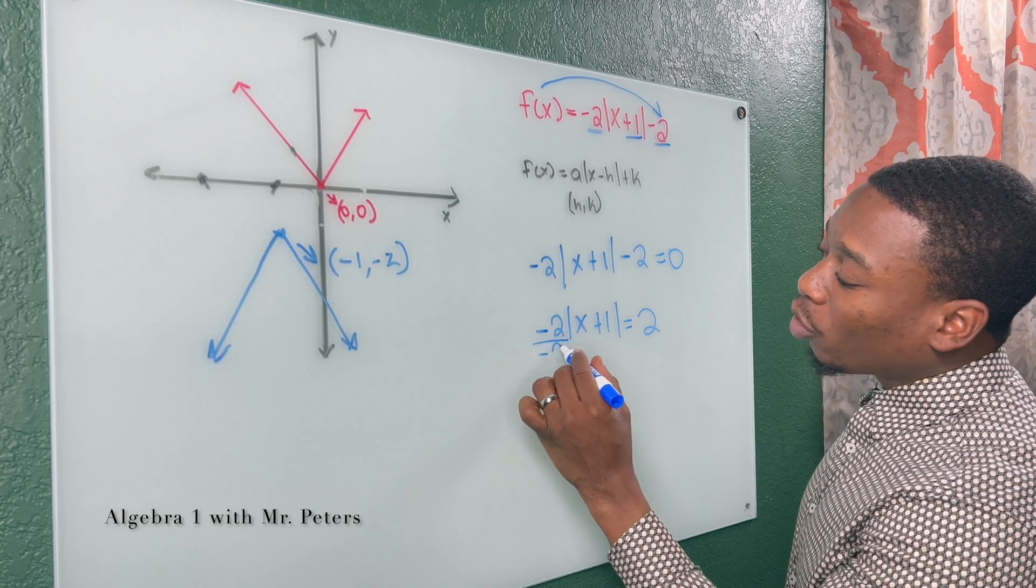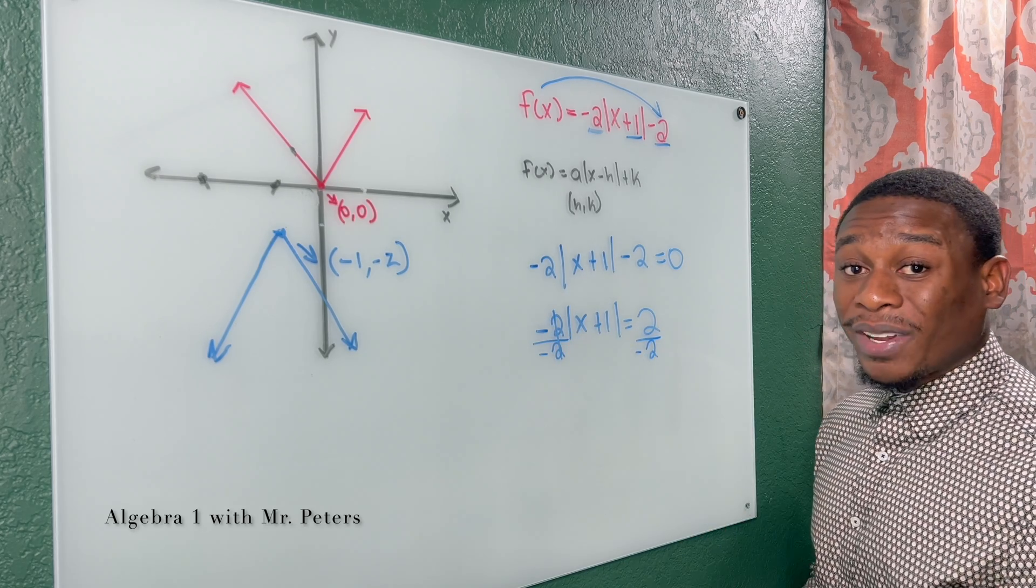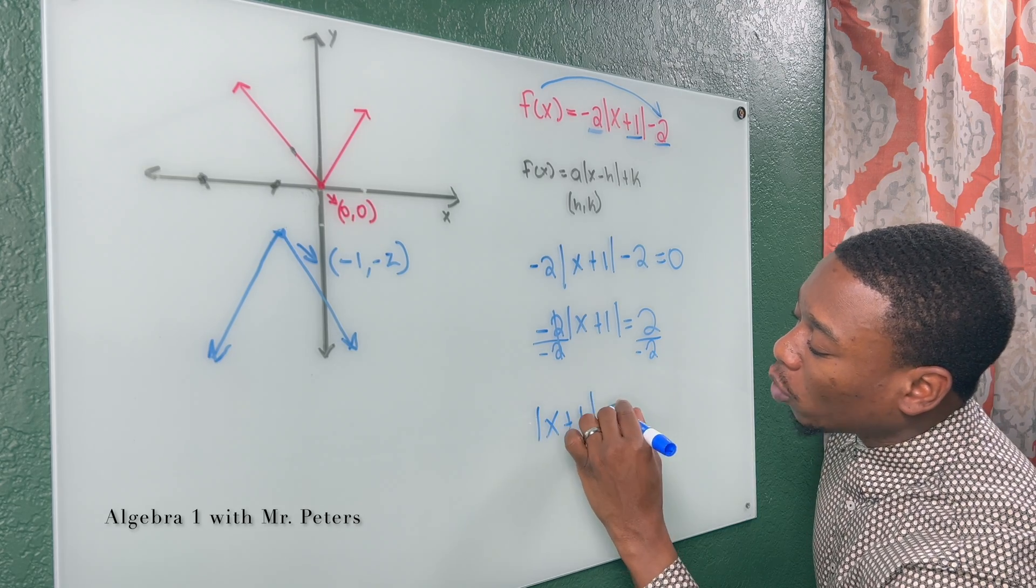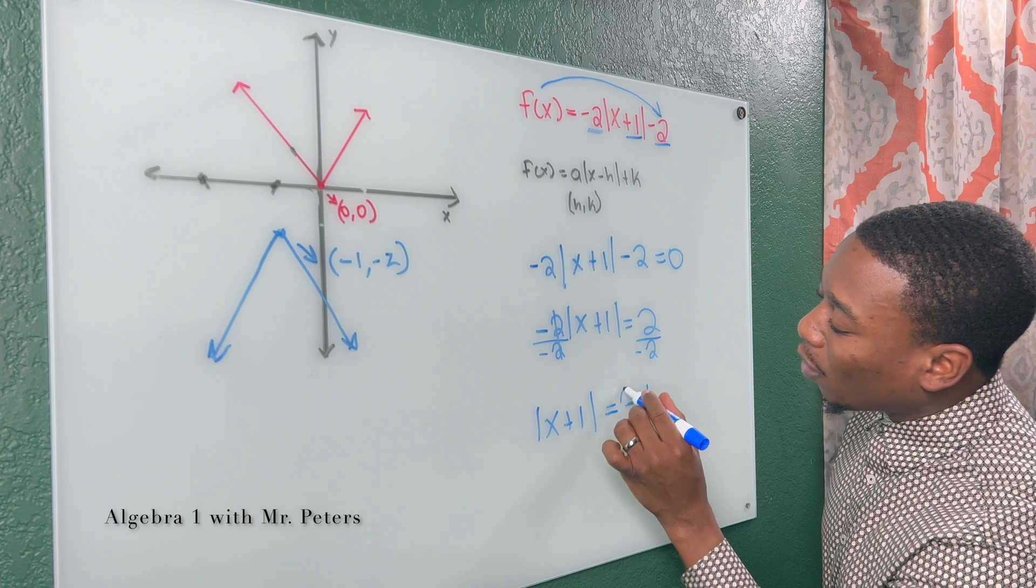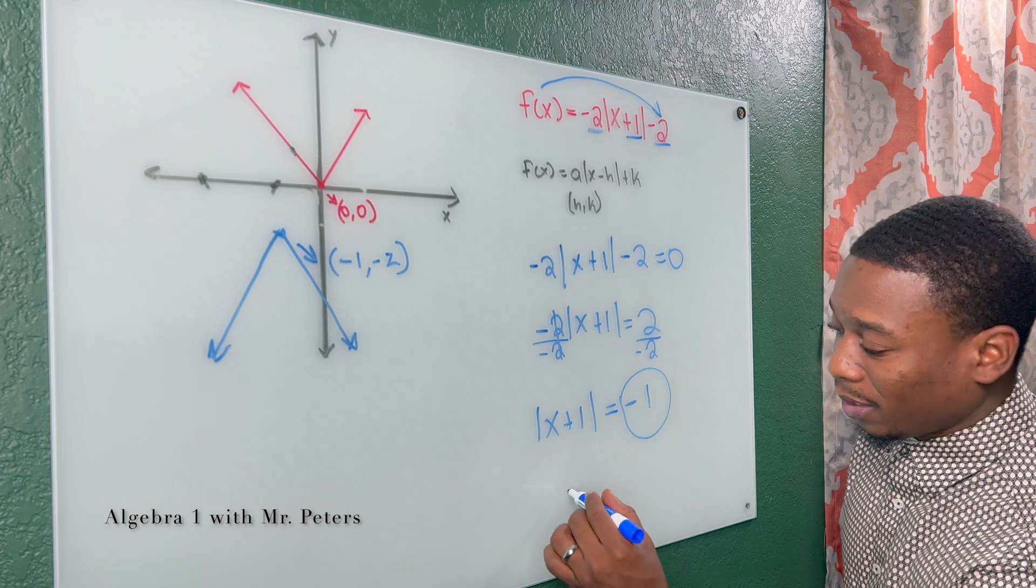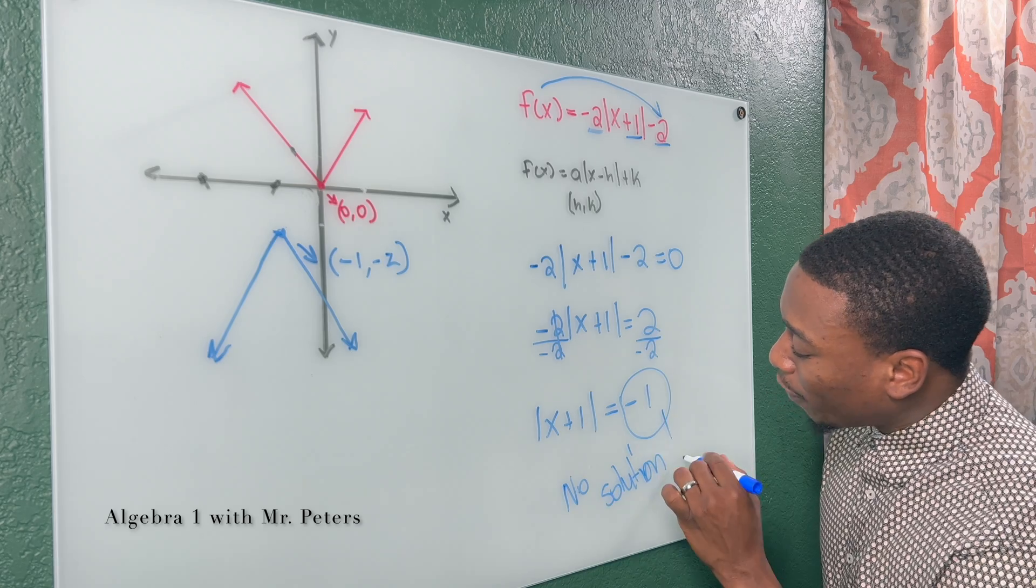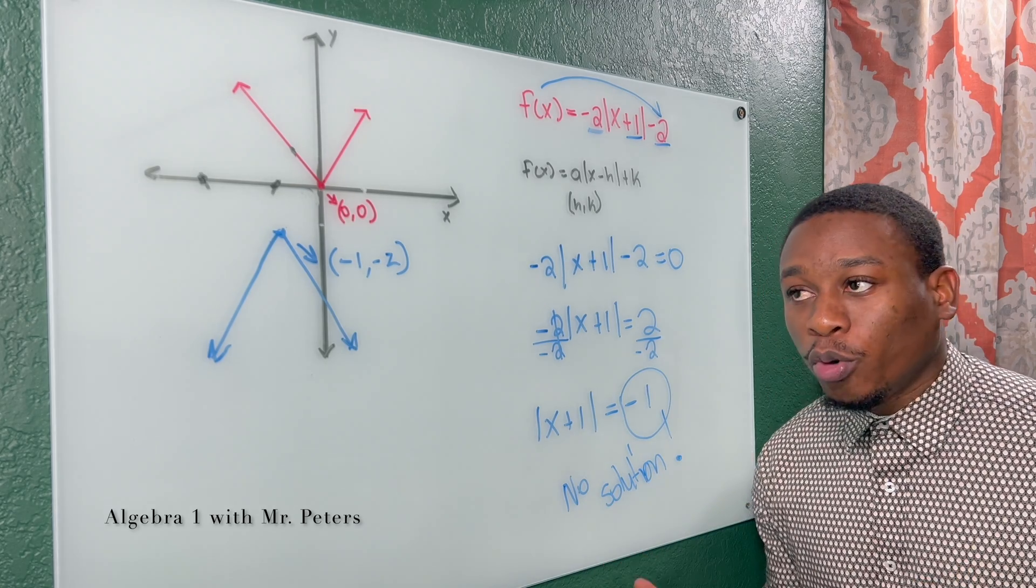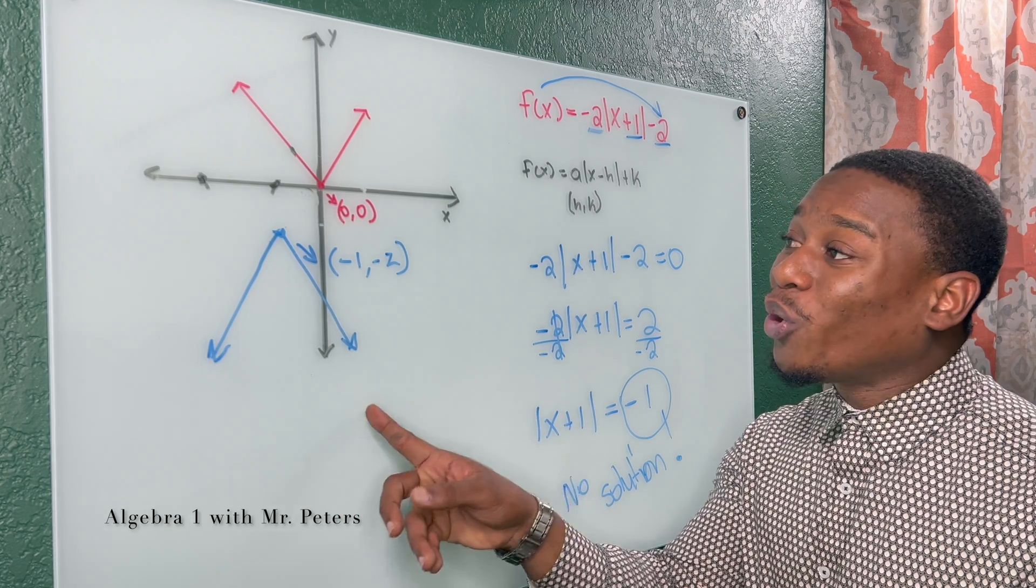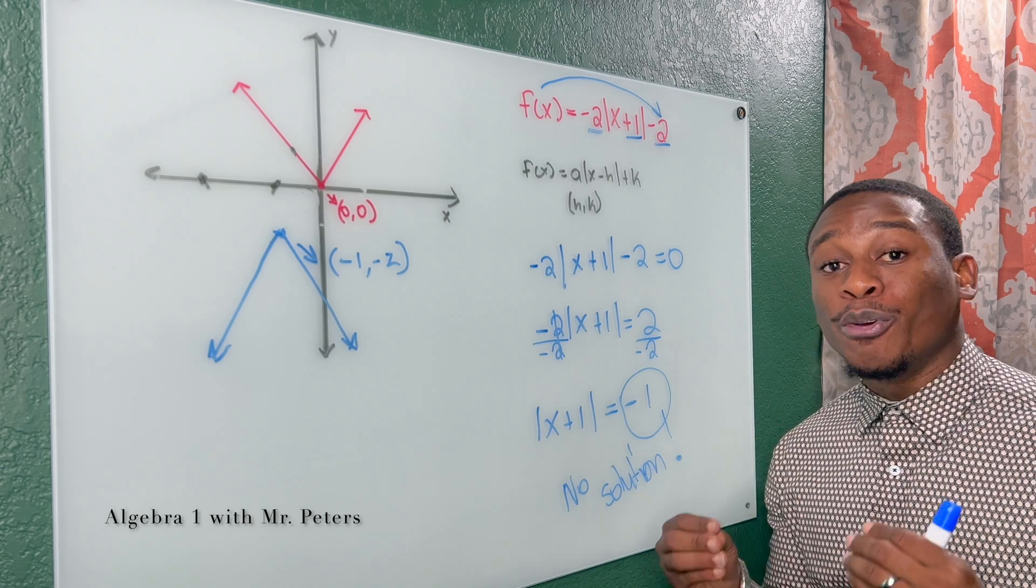However, after we isolate further and get the absolute value by itself entirely now, meaning we're ready to solve and create our two equations, we notice that our answer now is negative, meaning that we cannot do it. There is no solution for this absolute value graph. And just to prove this, look at it. This graph in blue does not and will not cross that x-axis, which are the solutions to the absolute value function.